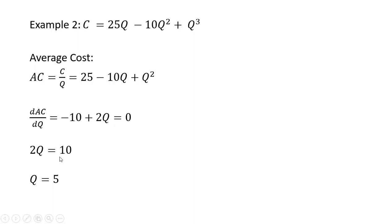So we'll get 2Q equals 10 and Q equals 5 will be our efficient scale. Okay, I hope you found this video helpful.